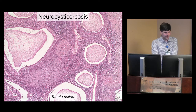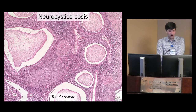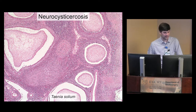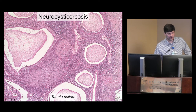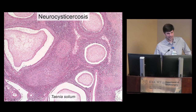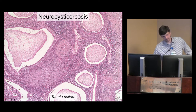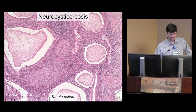Neurocysticercosis: you're looking for a structure totally foreign to the human body surrounded by granulomatous inflammation, with a three-layered appearance to the larva — the wall, an inner area, and a pinkish inner portion. The diagnosis is confirmed by the characteristic clinical-pathologic scenario. This is Taenia solium.